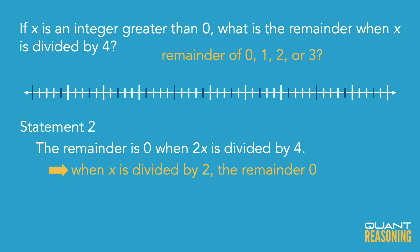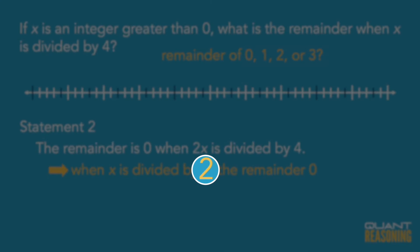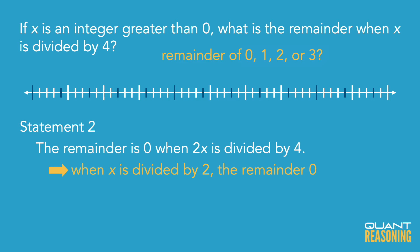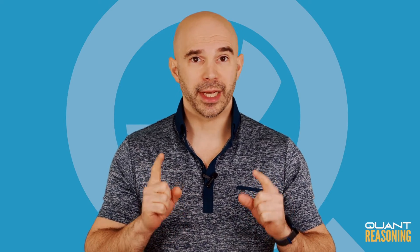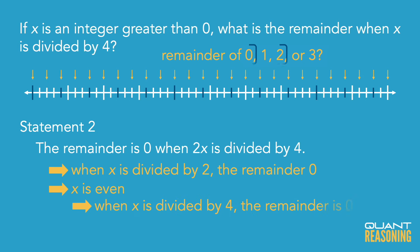We wanted to know about x in the context of divisibility by 4, not divisibility by 2. So unfortunately, this statement gives us information that's not exactly in the right context. But maybe we can still make an inference. Statement 2 tells us that x is even. So I can say x definitely belongs to one of two categories in divisibility by 4: it either has a remainder of 0 or a remainder of 2. It does not have a remainder of 1 or 3, because those categories are reserved for odd numbers.